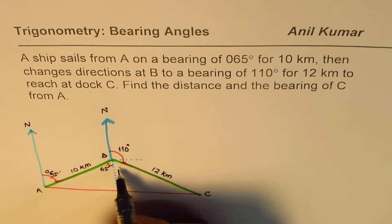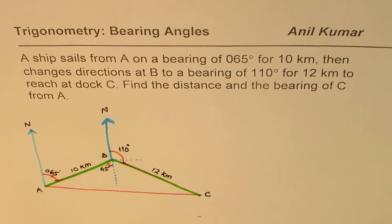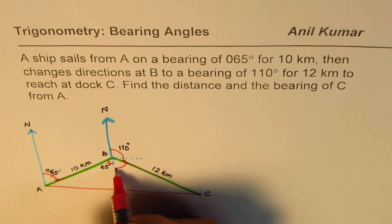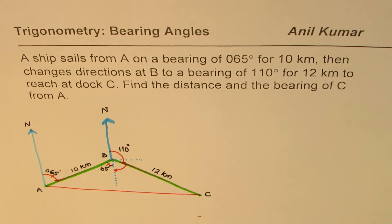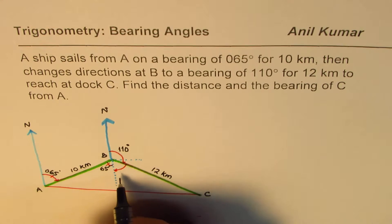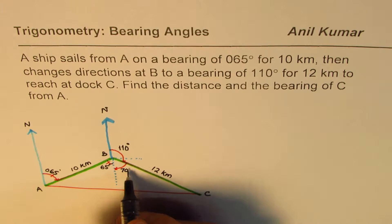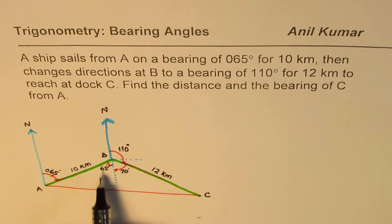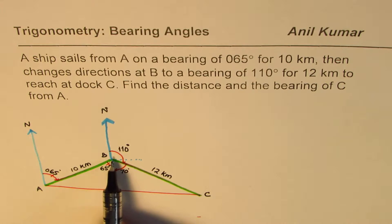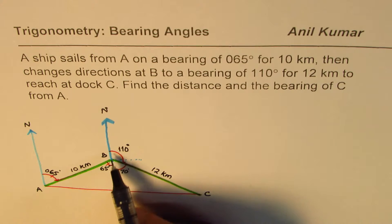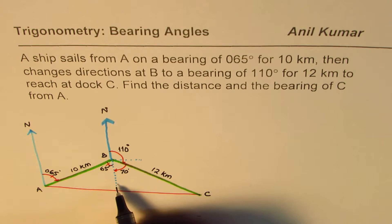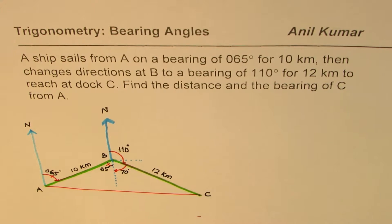How about this one? There is a linear pair at B, so sum of 110 and this should be 180. So that number is 180 minus 110, that should be 70 degrees. So we find this angle part of angle B as 65 degrees alternate interior angles between parallel lines, and the other angle using straight line which is 180 minus 110 gives you 70 degrees.